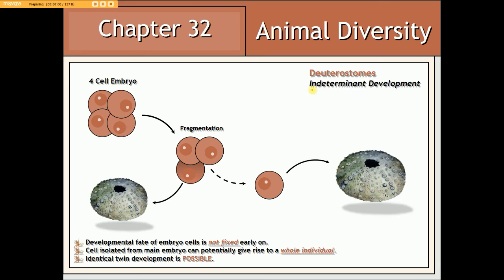In contrast, among deuterostome coelomates, the timing of stem cell differentiation is regarded as being indeterminate — the developmental fate of those stem cells is not fixed early on. Therefore, at the four-cell stage, if a cell were to fragment from the main embryo, it has the potential to develop into a whole individual genetically identical to one that arises from the original embryo. Thus, among deuterostome coelomates, identical twin development is possible.